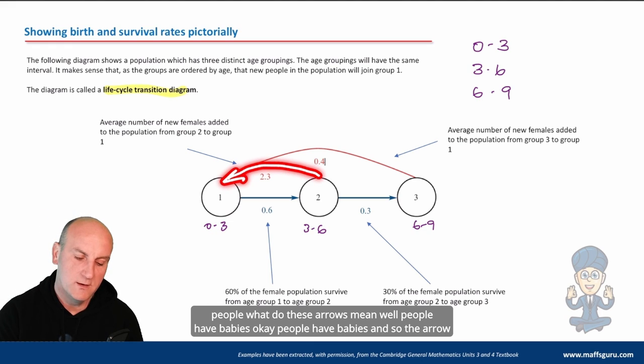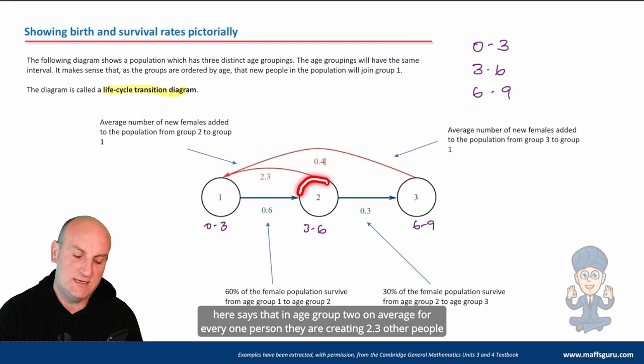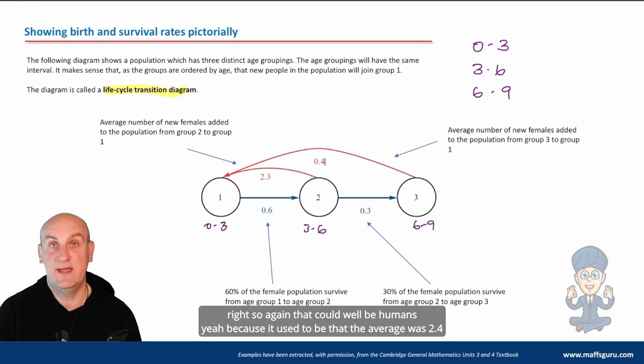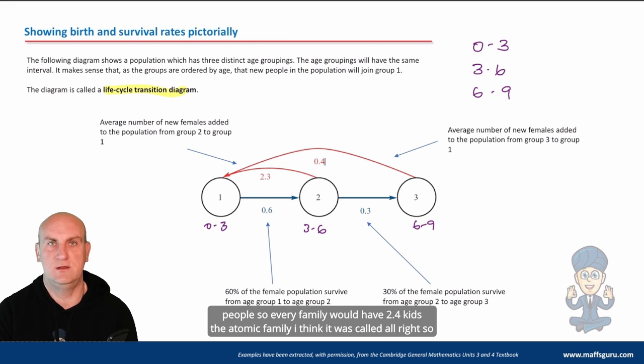What do these arrows mean? Well, people have babies. And so the arrow here says that in age group two, on average, for every one person, they are creating 2.3 other people. So that could well be humans, because it used to be that the average was 2.4 people. So every family would have 2.4 kids, the atomic family, I think it was called.